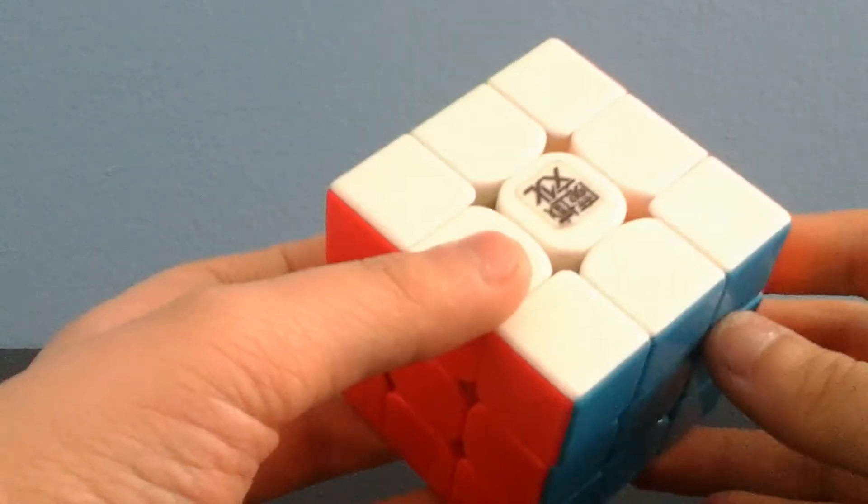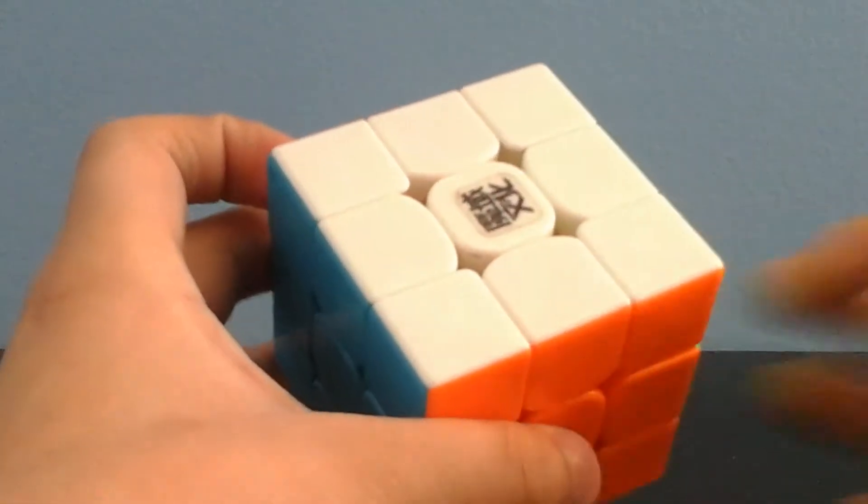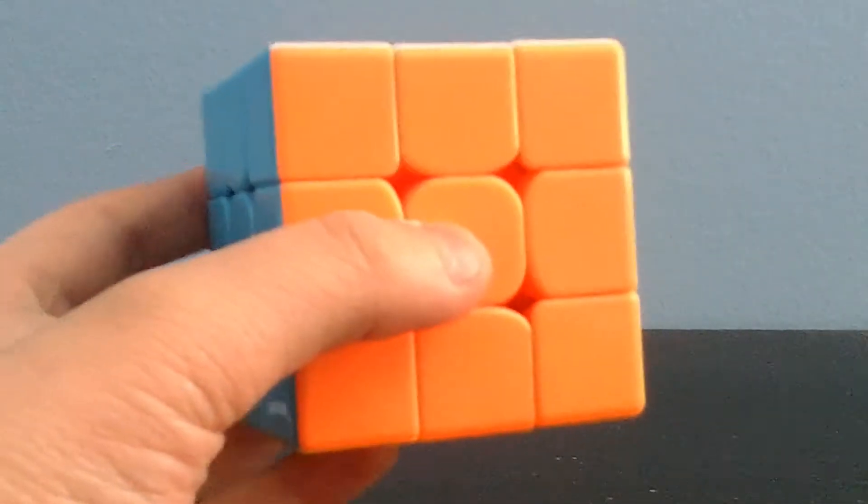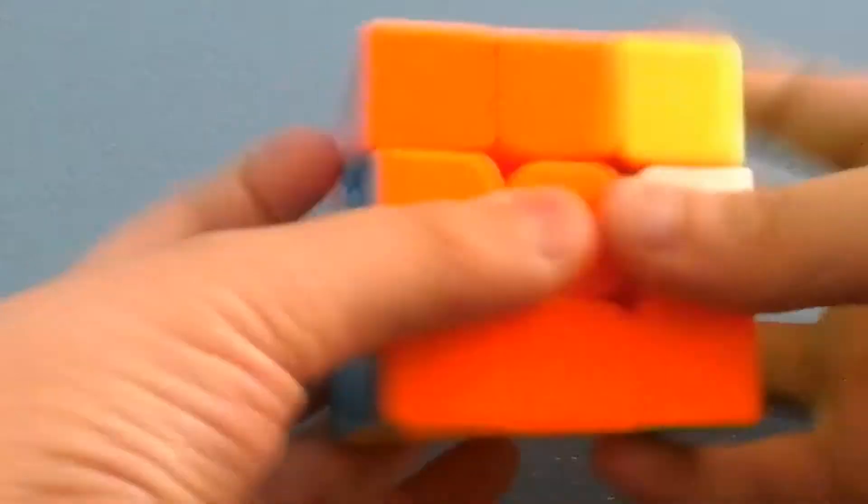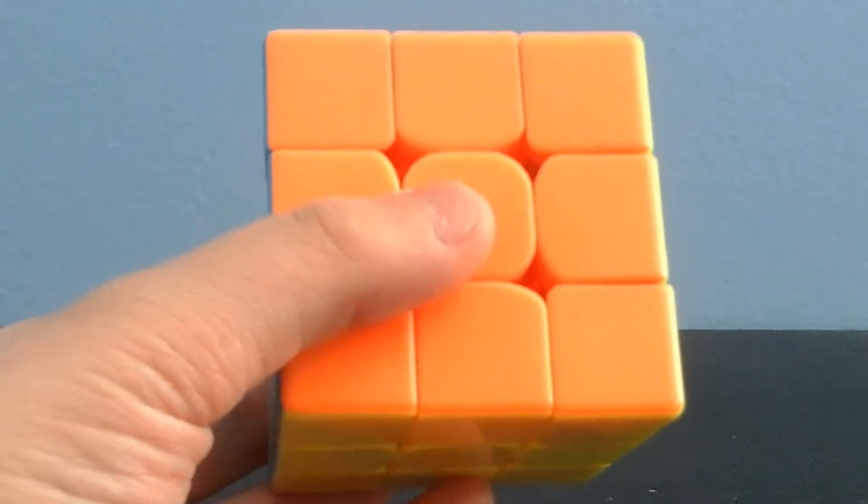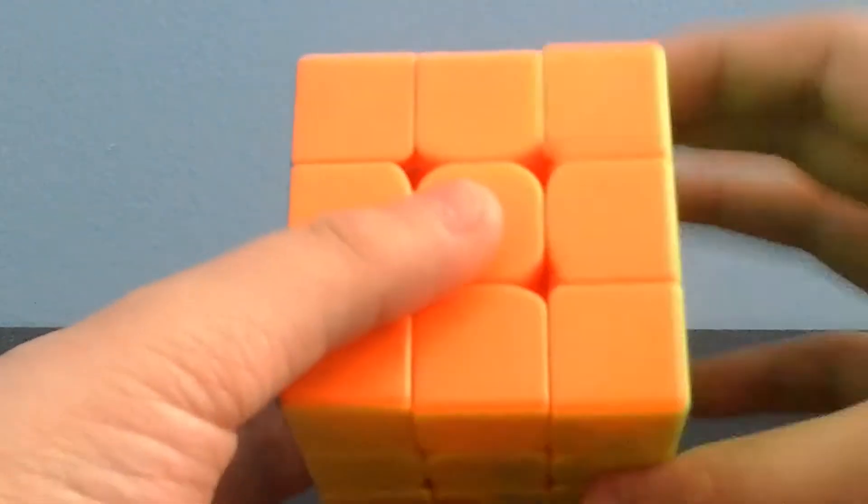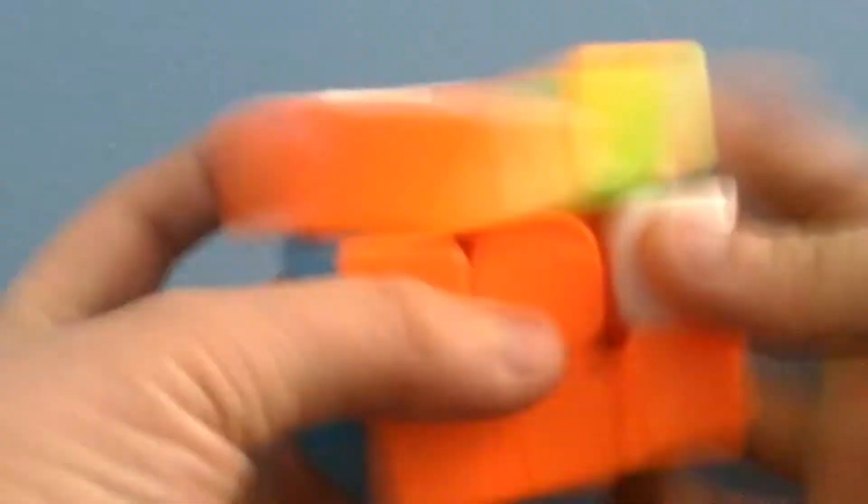The cube comes in black and stickerless; mine here is stickerless. The turning doesn't disappoint—right out of the box it's extremely fast, yet still controllable and stable thanks to the magnets. The magnets help the pieces snap into place but are scarcely noticeable when performing algorithms.